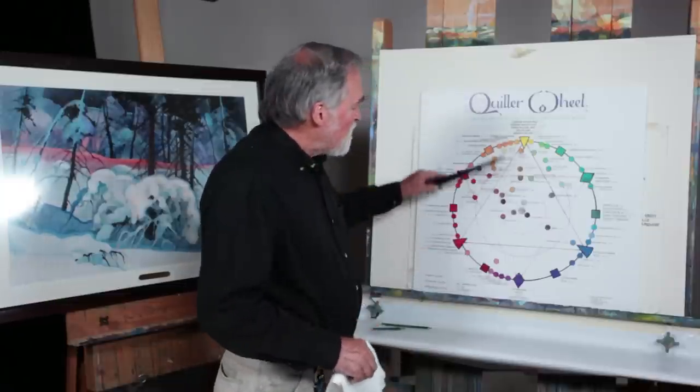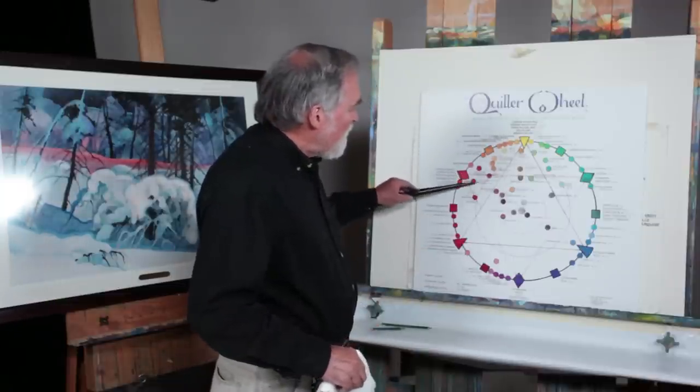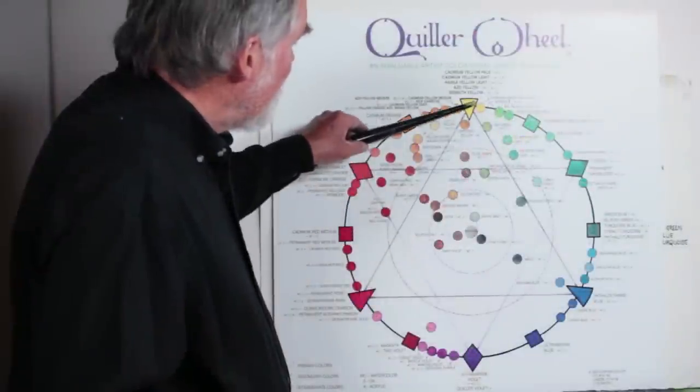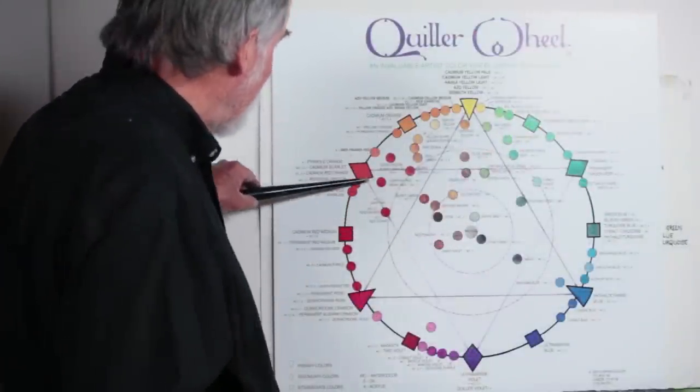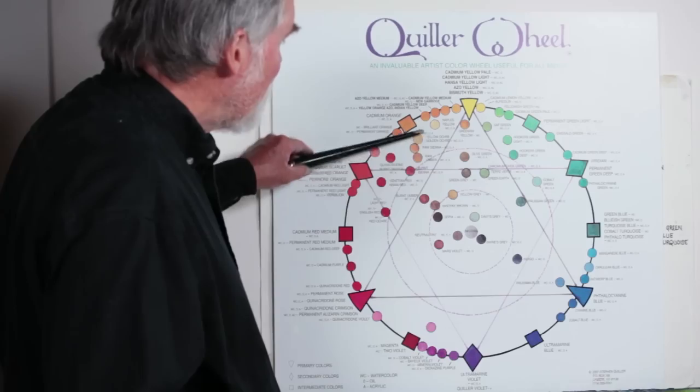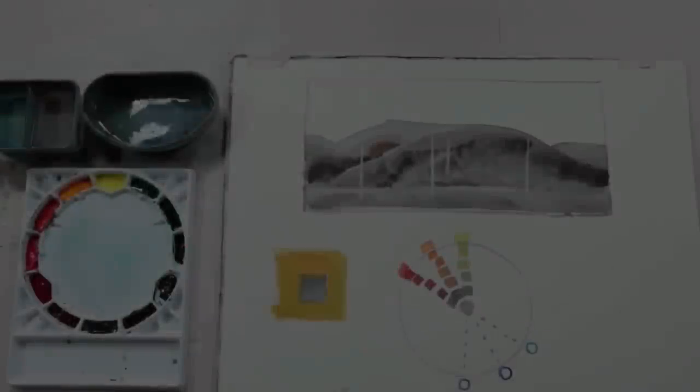Now the thing that's interesting about this is it's not only these colors, but all the colors that go down to neutral at the same time. So if I draw a pie wedge here and look at all of these colors in through here, all of those would be considered part of the same color family of the analogous colors.